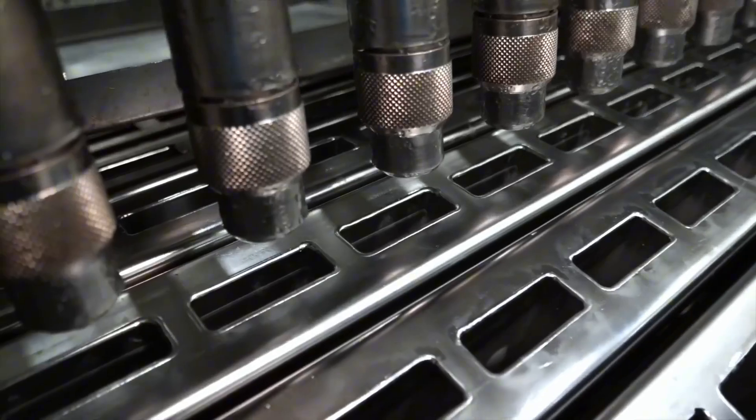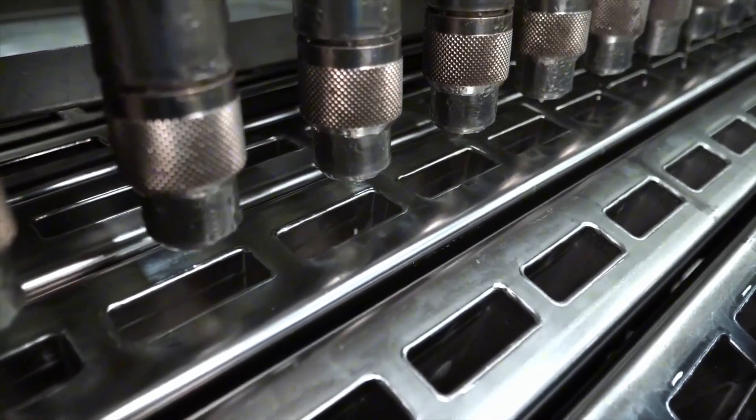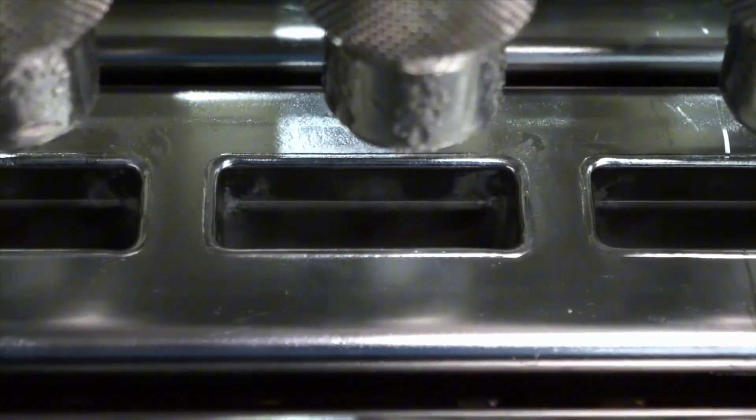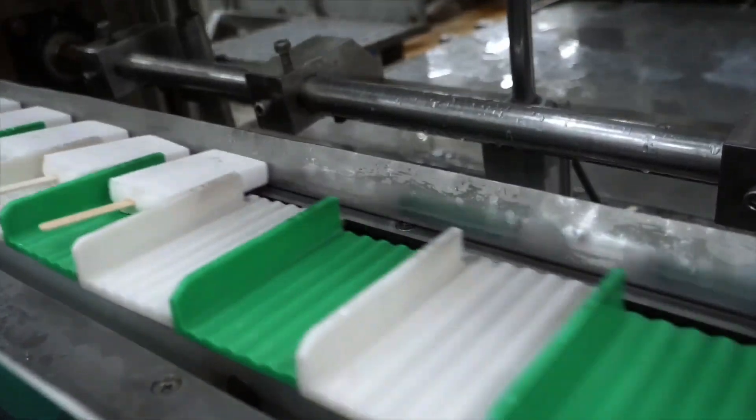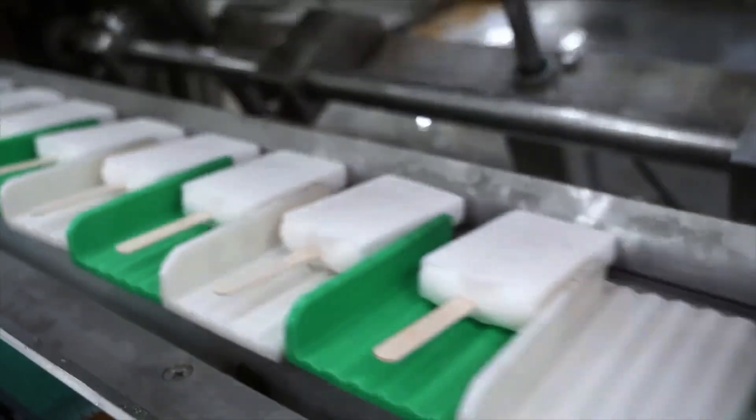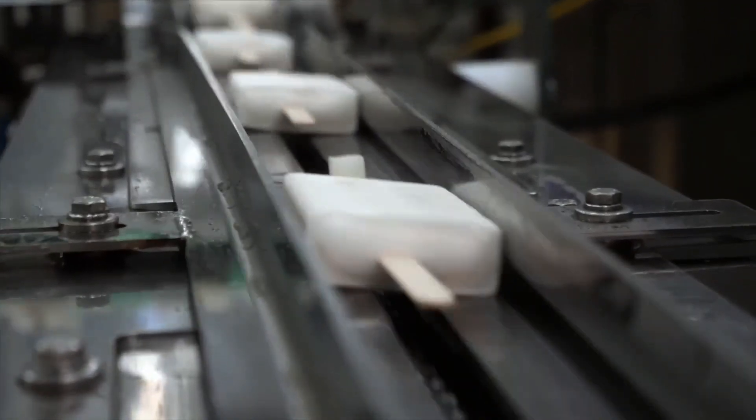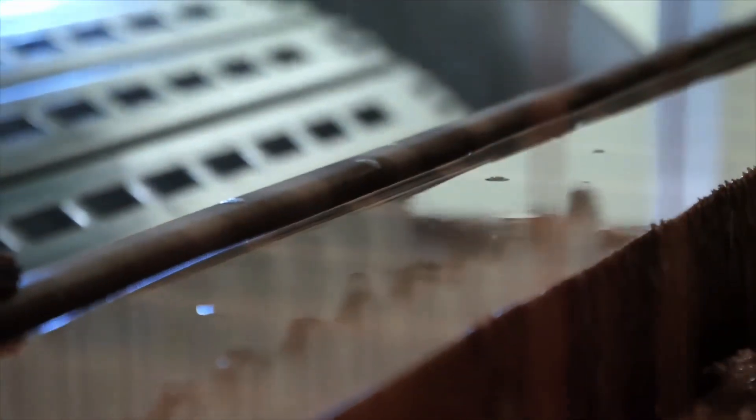As the mix starts to freeze, it's time to introduce the extras. Caramel ribbons, strawberry jams, cookie pieces, or chopped nuts. All are added through special dosing systems. Machines swirl the fillings to create beautiful marble patterns and distribute everything evenly. It's critical that no cup or cone ends up empty, so each batch passes through an automated visual inspection system. Cameras track the quantity and placement of mix-ins in real time, alerting operators if anything looks off.